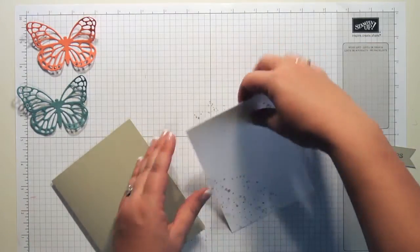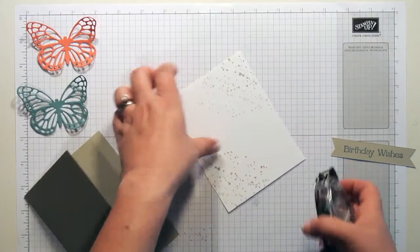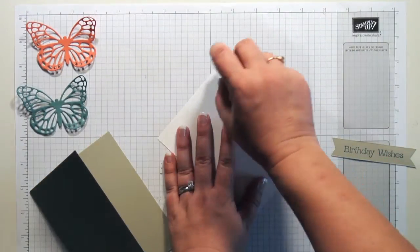Okay, now I'm ready to assemble my card, and I just want to take my Whisper White piece and put it straight down on my card base.